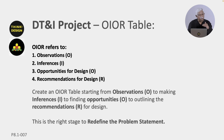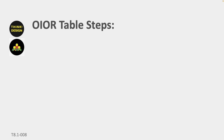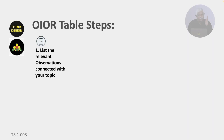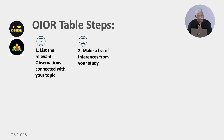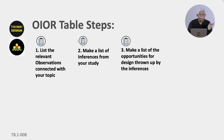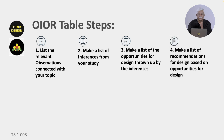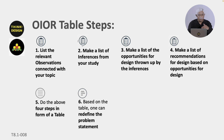This is the right stage also to redefine the problem statement. The steps for creating the table: list the relevant observations connected with your topic — the most relevant ones. Make a list of inferences from your study. Make a list of the opportunities for design thrown up by the inferences, and make a list of recommendations for design based on opportunities. Do the above steps in the form of a table, and based on the table one can redefine the problem statement. If you are confused, there are examples shown in the tool section.